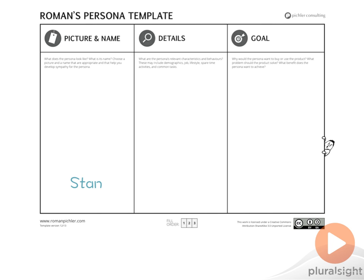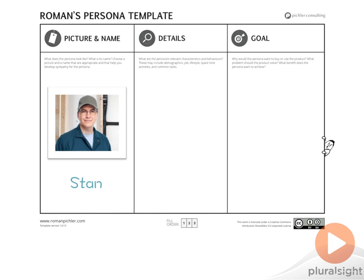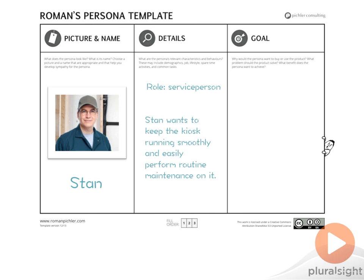Next we'll build a persona for our service person role. We'll give this role the name Stan and create a picture that represents him. Stan's role in the system is 'service person,' and the description is that Stan wants to keep the kiosk running smoothly and easily perform routine maintenance on it. Stan's goal with the system is that he just wants to be home by dinner. I intentionally made this sound bite a bit cheeky because the humorous twist makes it easier to remember — but it still succinctly captures that Stan's driving goal is convenience and being able to easily perform maintenance on the system.